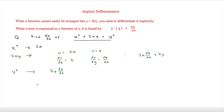Now we add all of these together: 2x, plus 2x dy/dx, plus 2y, plus 2y dy/dx. And we can say that that is equal to 0.